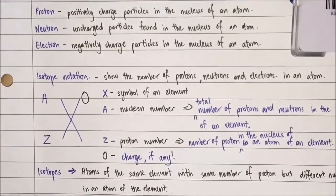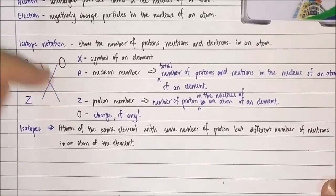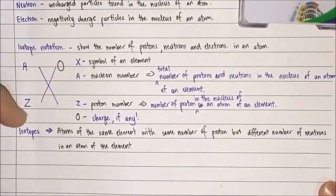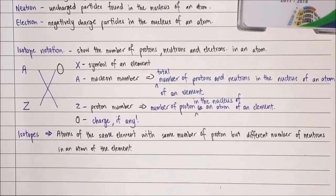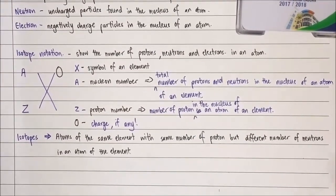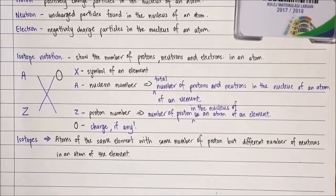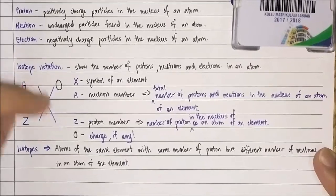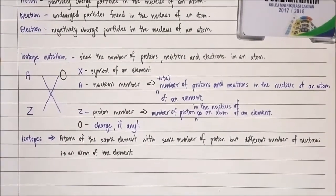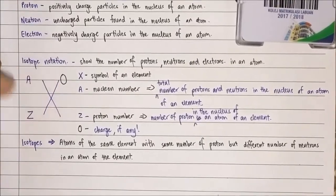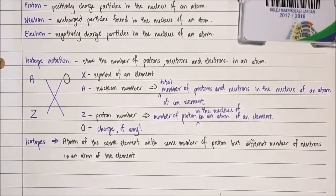Now we will move on with the isotope notation. You see here a big symbol, writing with X in the middle, and A and Z. Isotope notation shows the number of Proton, Neutron, and Electron in an atom. X is a symbol of an element. For example, the X can be written for Na if the element is sodium.